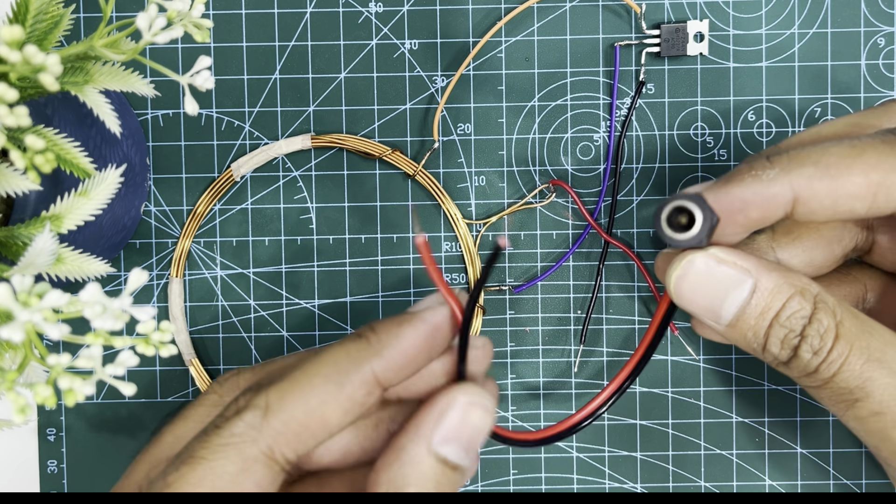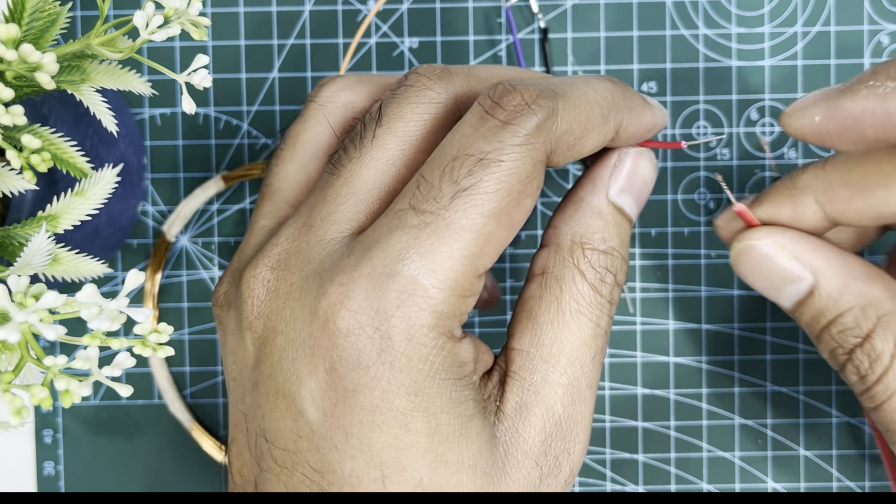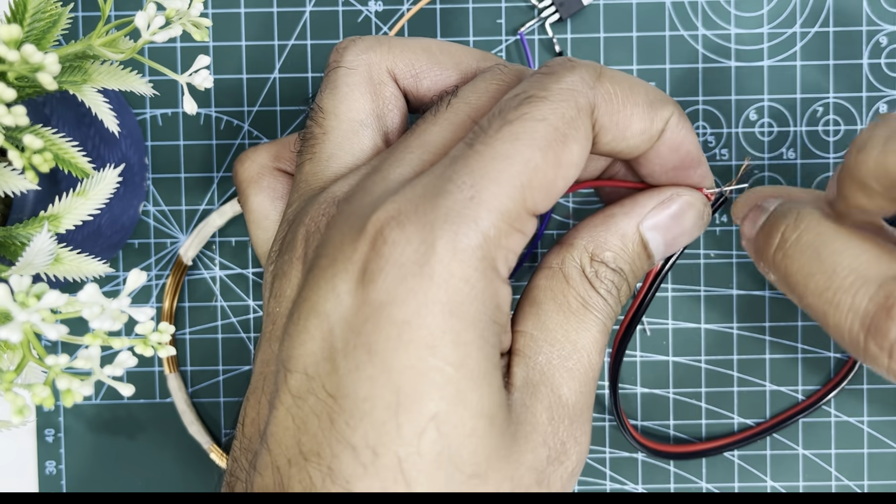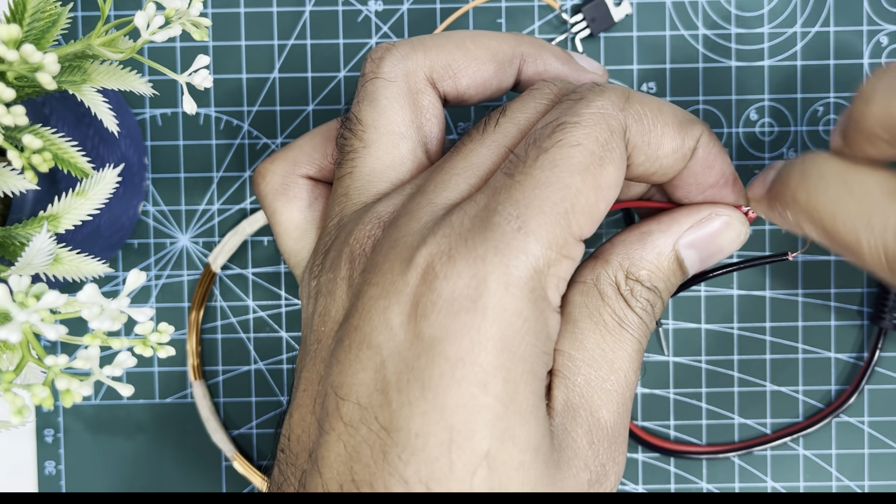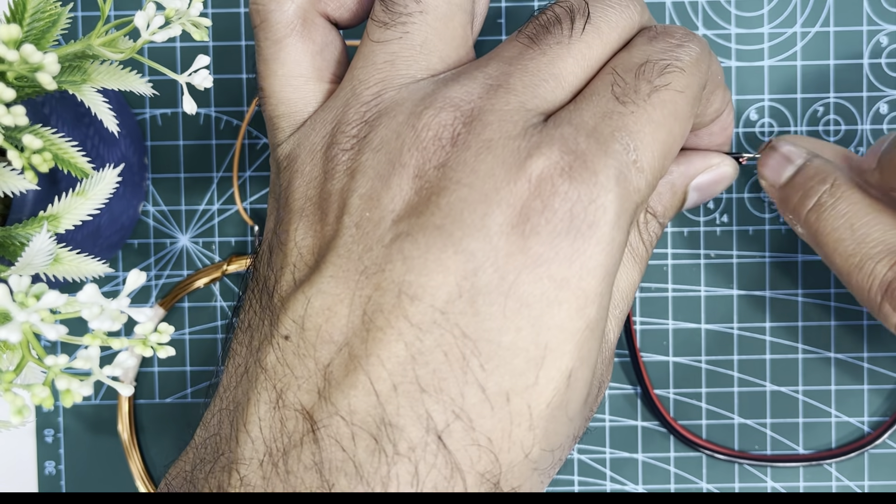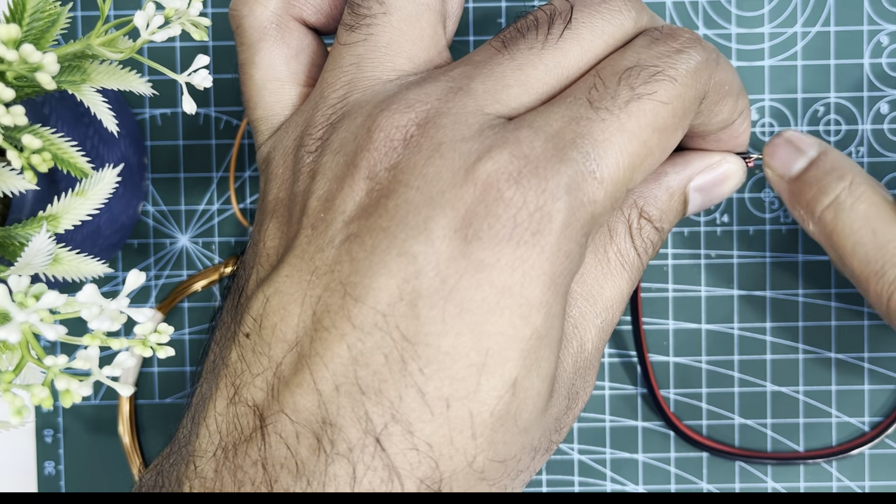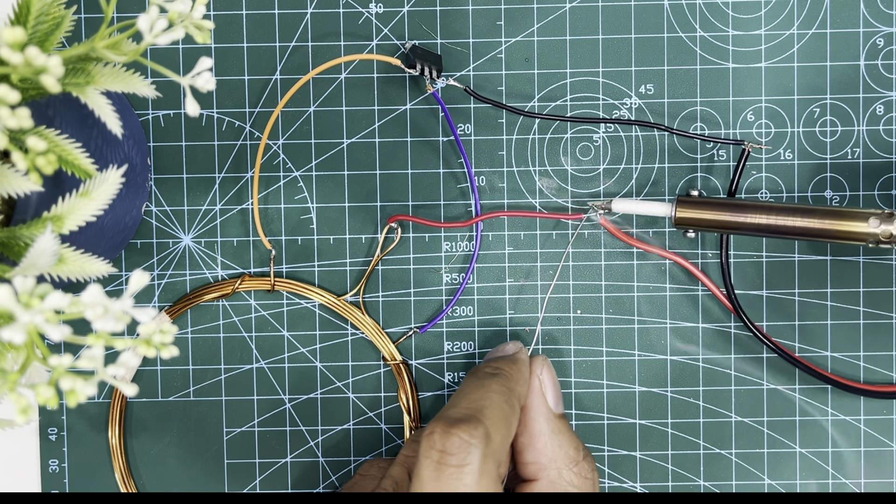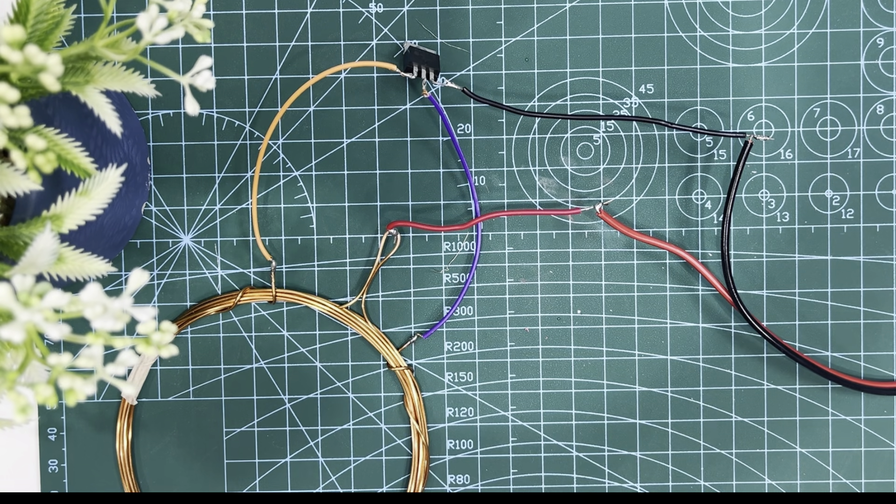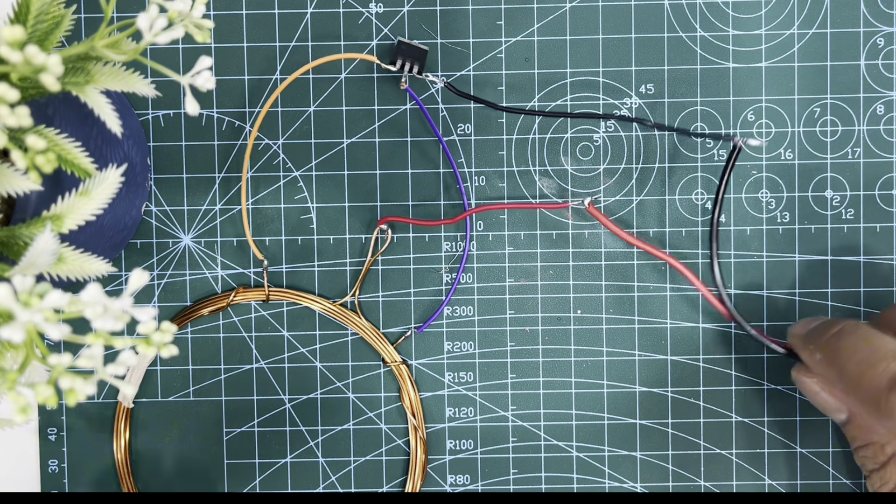I'll use a female DC jack connector and connect the red wire of the jack with the center loop of the coil and the black wire with the source terminal of the MOSFET. With that, the primary coil becomes ready.